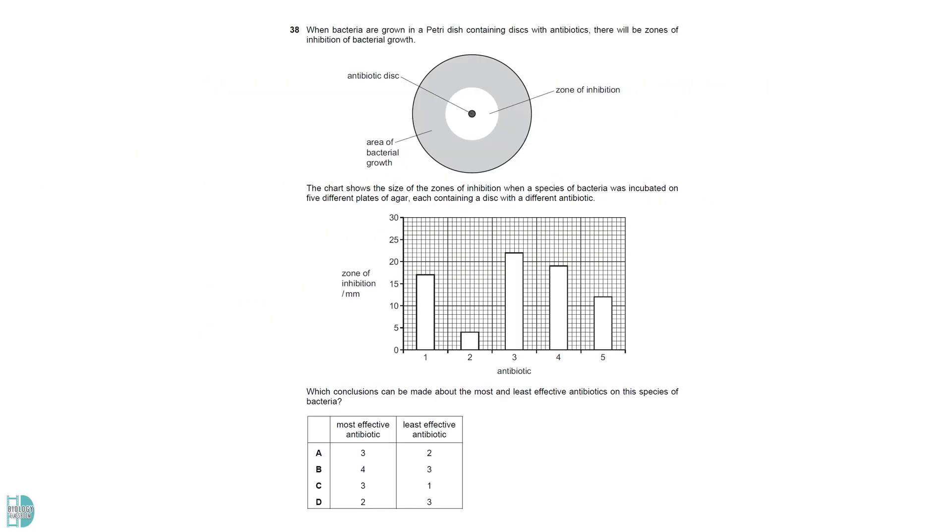The zone of inhibition forms when bacteria are killed by the antibiotic diffused out from the disc. The larger the zone, the more cells are killed, indicating a lower resistance. So the most effective antibiotic creates the greatest zone of inhibition, while the least effective one won't kill that many cells, forming the smallest zone.